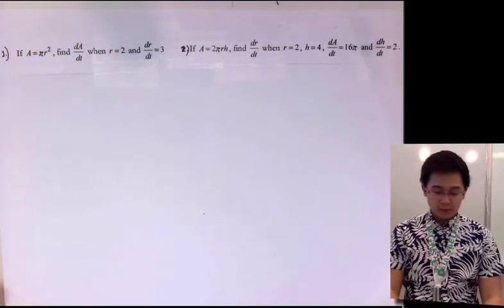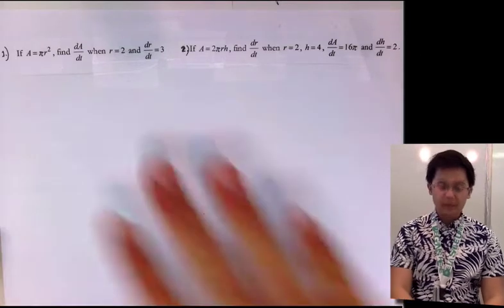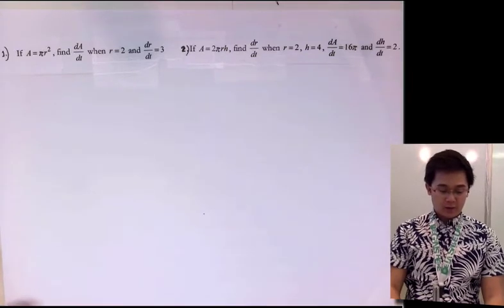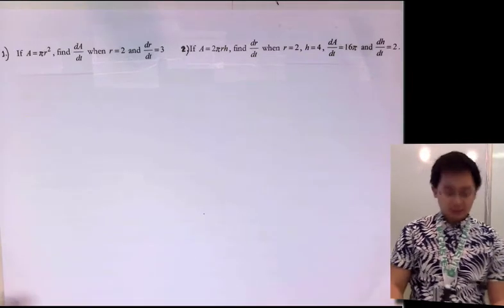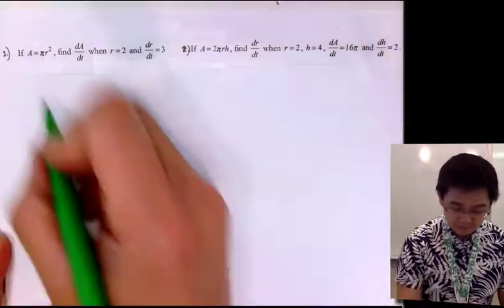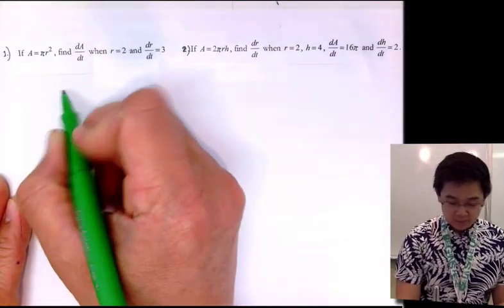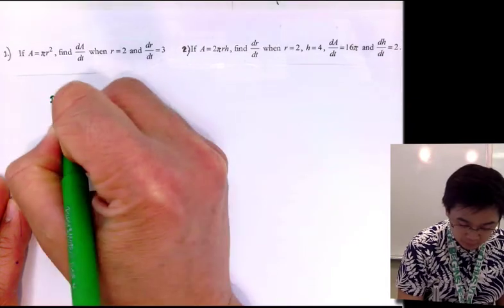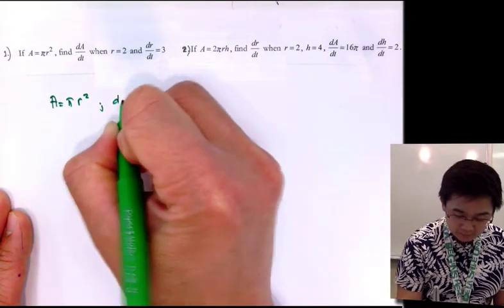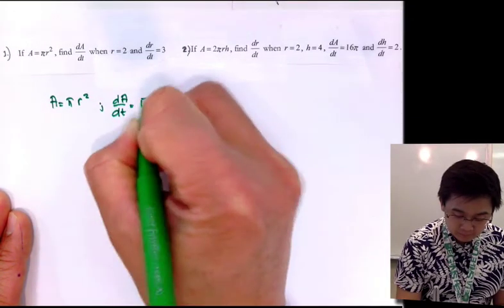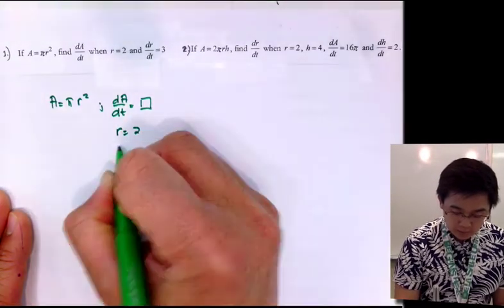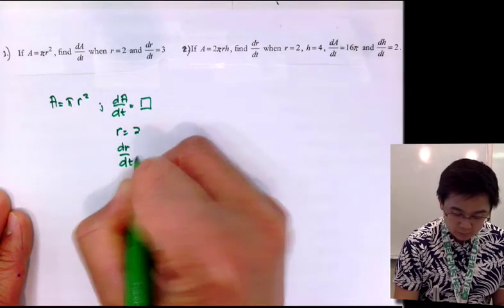We're going to be working on related rates, starting with two problems involving how to use implicit differentiation to differentiate a given formula. For problem number one, we have the formula for the area of a circle: A equals pi r squared. We need to find dA/dt, given that r equals 2 and dr/dt equals 3.